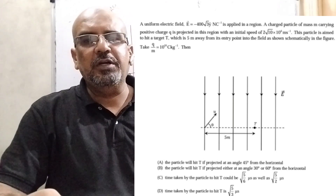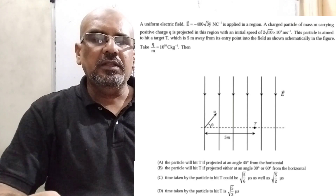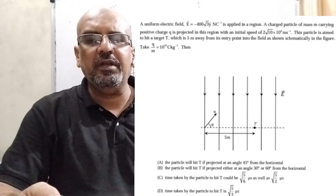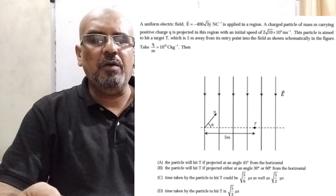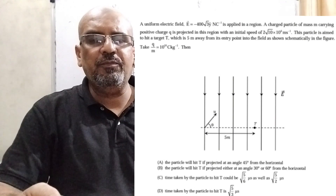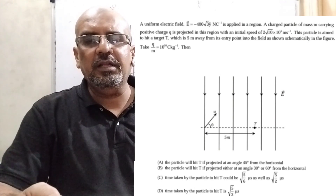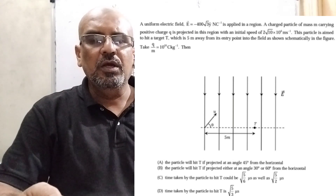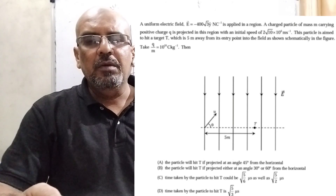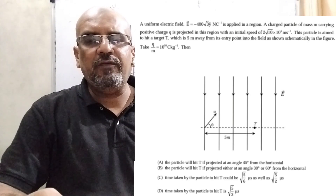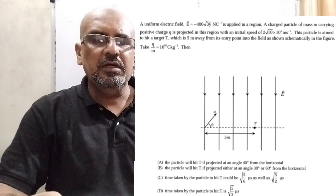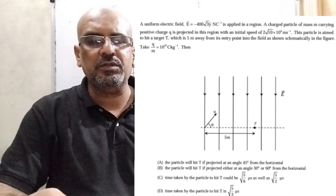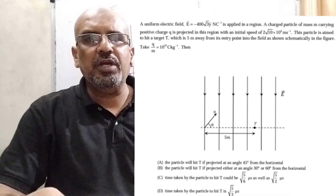This is a multiple choice question. We have four options. Option A: the particle will hit T if projected at an angle of 45° from the horizontal. Option B: the particle will hit T if projected at either 30° or 60° from the horizontal. Option C: time taken to hit T could be √5/6 microseconds as well as √5/2 microseconds. Option D: time taken to hit T is √5/3 microseconds. This question is from JEE Advanced 2020.